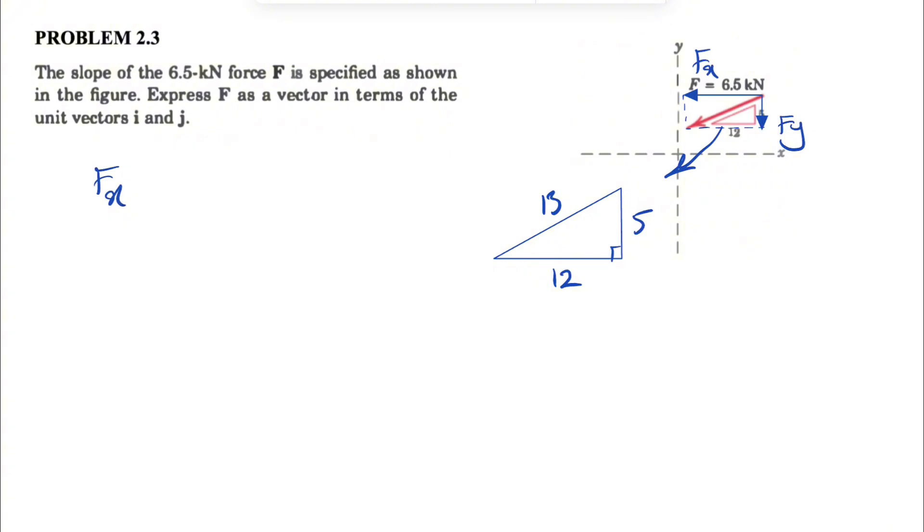So let's go with Fx and Fy. Fx, as I mentioned, it's to the left, so it's negative. And as we can see, Fx, if we call this angle here alpha, would be the cosine of alpha.